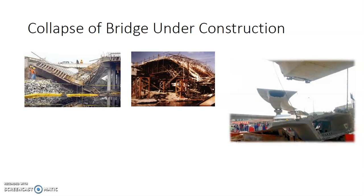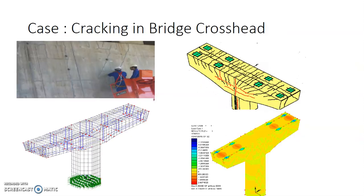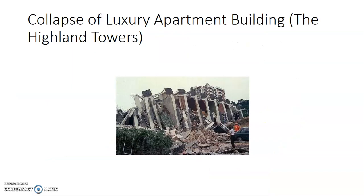Another bridge collapse under construction is related to the second bridge of Penang — the Pulau Penang second bridge — where cracking occurred at the centre of the bridge. Another famous structural failure in Malaysia is the Highland Tower incident, which involved the collapse of a luxury apartment building in Kuala Lumpur.